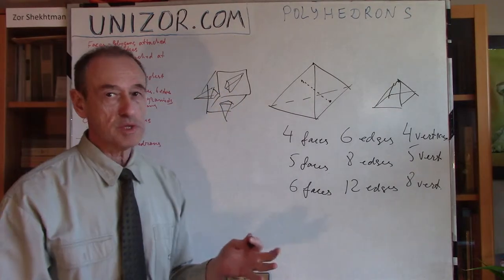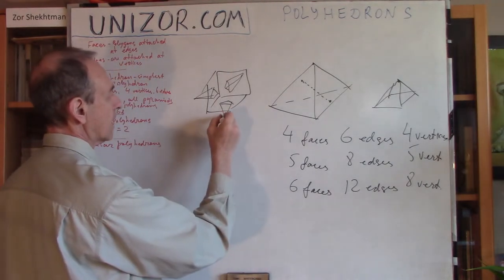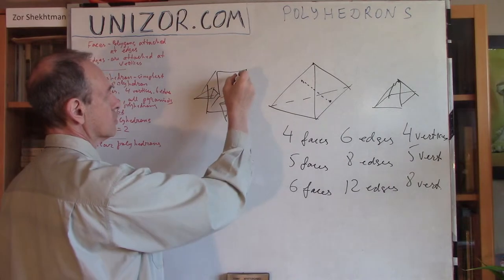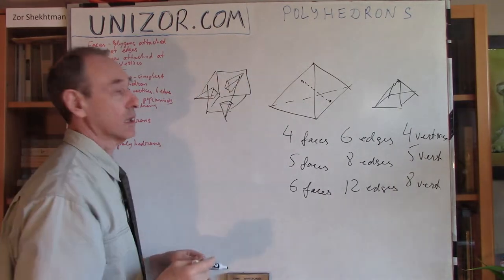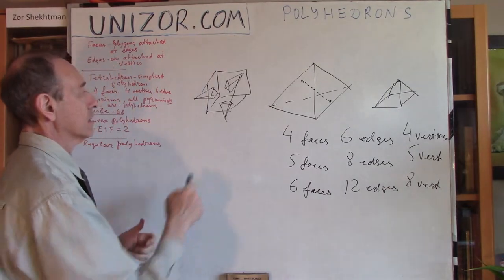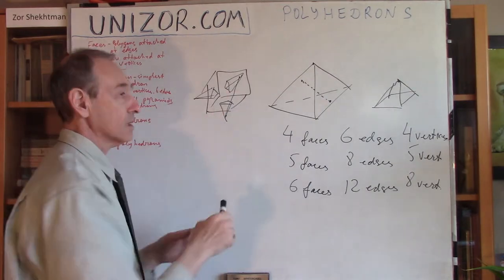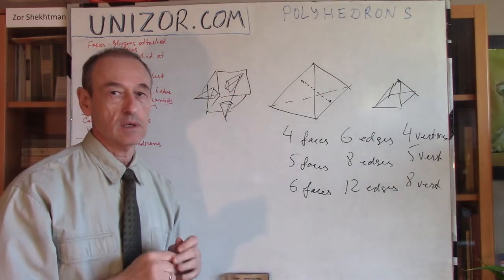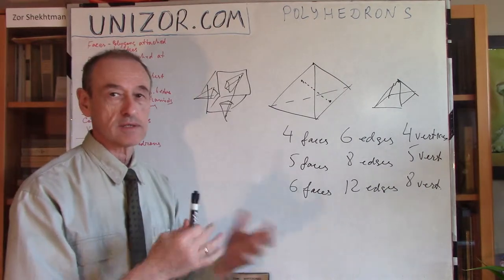Now, it will also be polyhedron. However, if you want to connect, for instance, this point to this point, it might actually go outside of the whole polyhedron. It will be outside of the whole thing. But without these pyramids, the cube itself is a convex polyhedron.